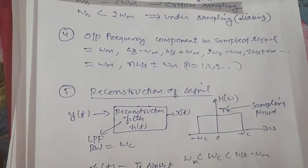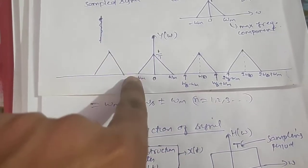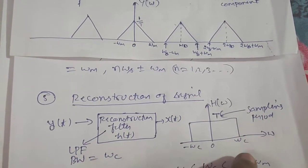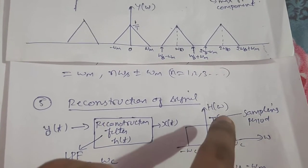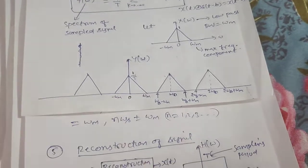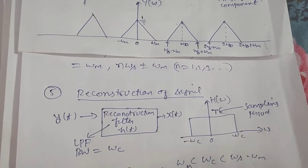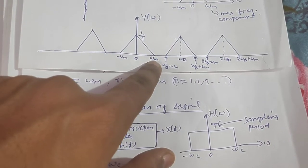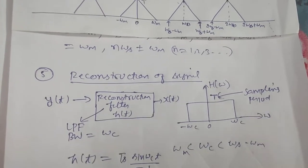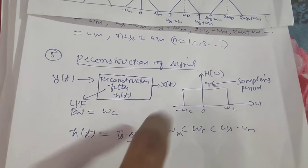To reconstruct the signal, we pass the sampled signal through a proper low-pass filter. I am drawing a low-pass filter with critical frequency ω_c and amplitude T — because the sampled spectrum was scaled by 1/T, multiplying by T recovers the proper signal. The constraint on the critical frequency is that ω_c must be greater than ω_m and less than ω_s minus ω_m. This is the constraint on the critical frequency of the low-pass reconstruction filter, whose time-domain function has the corresponding sinc-like shape.